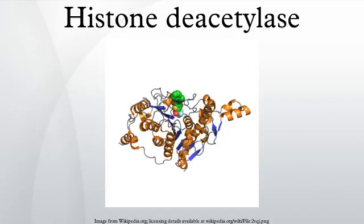Histone deacetylases are a class of enzymes that remove acetyl groups from an N-acetyl-lysine amino acid on a histone, allowing the histones to wrap the DNA more tightly. This is important because DNA is wrapped around histones, and DNA expression is regulated by acetylation and deacetylation. Their action is opposite to that of histone acetyltransferase.